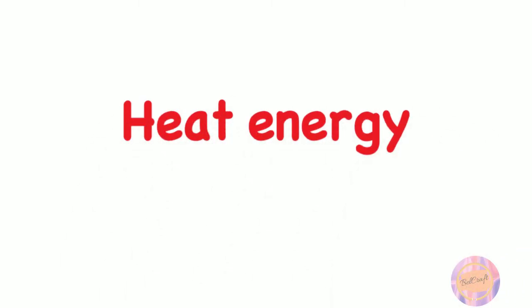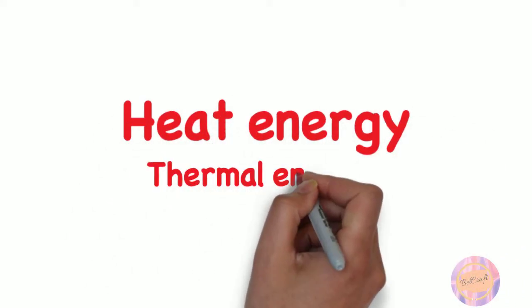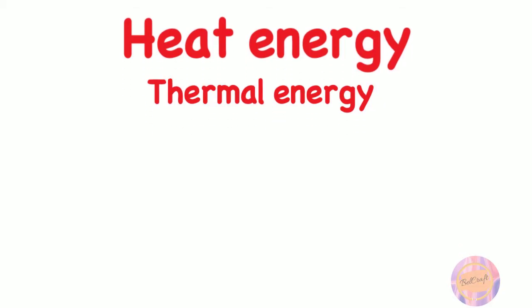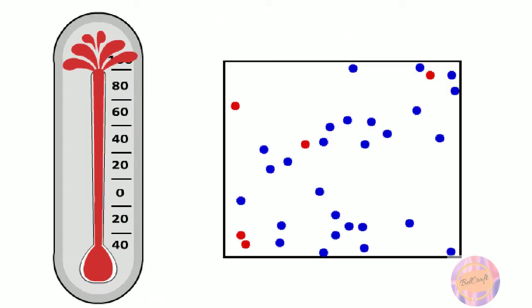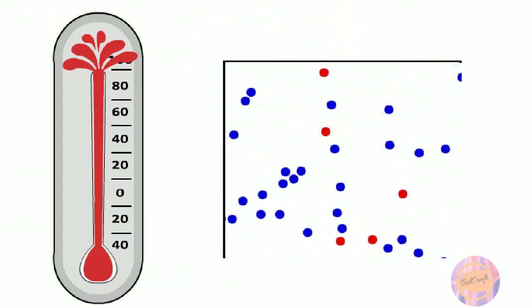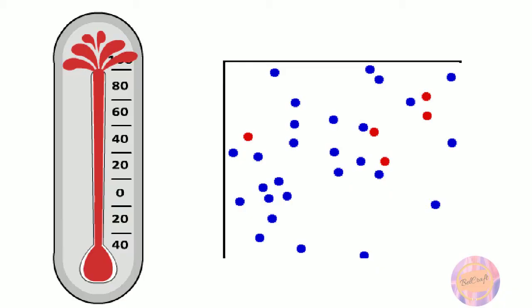Heat energy, also called thermal, is the energy an object has because of the movement of its molecules. Heat energy is produced when a rising temperature causes atoms and molecules to move faster and collide with each other.